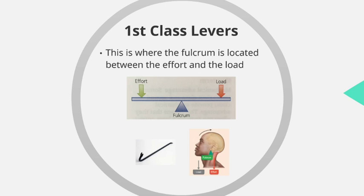In sporting terms, a good example of a first class lever is at the neck. The fulcrum is the neck joint. The effort on one side of the lever arm is provided by the trapezius muscle at the back of the neck, and the load at the opposite end is the weight of the cranium pulling down. A sport example would be a footballer performing a flick-on header, where a long ball is played up to an attacker who flicks it on to someone behind him.